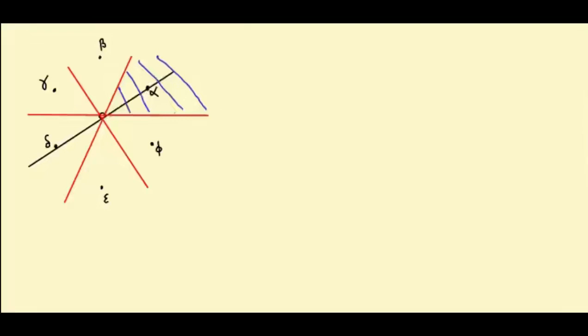So what are these rays? Well, this horizontal guy is orthogonal to the root beta. So this is π_beta.